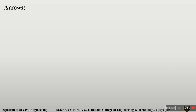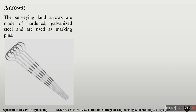Next we will discuss some more instruments used in chain surveying. The first one is arrows. These are made of galvanized steel material. At the top it is in the shape of a ring, and at the bottom they have a sharpened edge so they can be easily inserted into the ground. The main use of arrows is for marking stations on the surface of the ground.